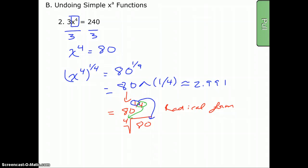So it is possible to say that our answer is just the fourth root of 80 as your answer. Then you could say that it's approximately 2.991. Keep in mind that the fourth root of 80 is exact. 2.991, no matter how many decimals we write, is just an approximation.